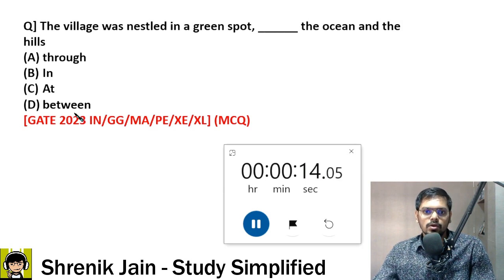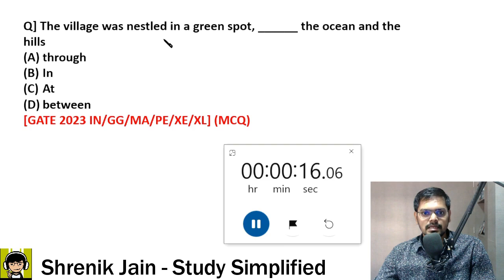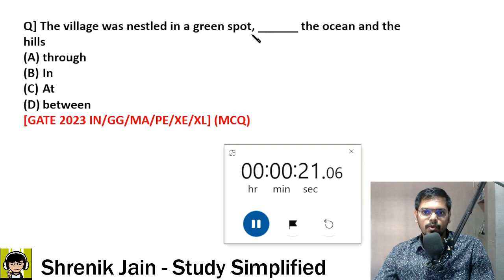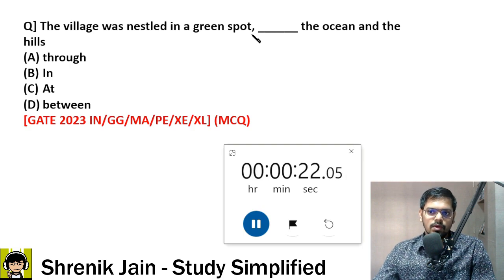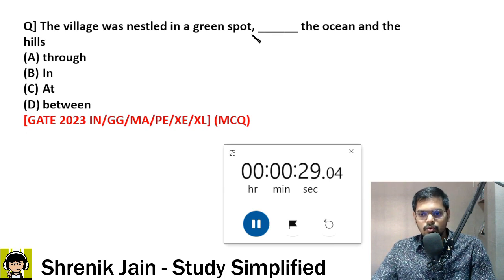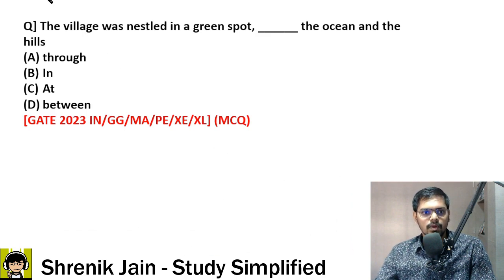What do you mean by 'nestled'? It means settled within — in a green spot. So what would be the answer? 5, 4, 3, 2, 1 — done. The correct answer is D: between.